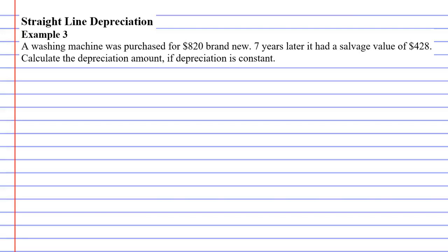Straight line depreciation, Example 3. We have a washing machine that was purchased for $820 brand new. This is the original purchase price V₀. Seven years later, n equals 7, it had a salvage value of $428.